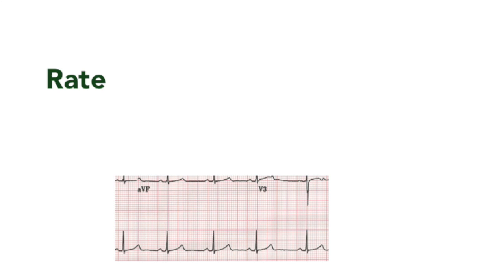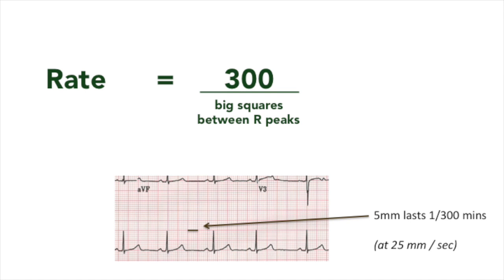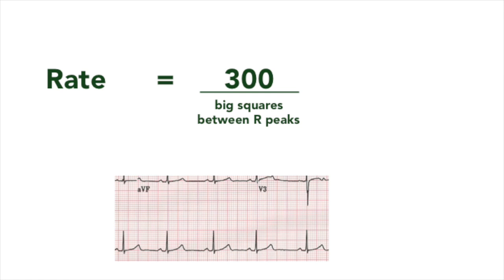For an ECG printing at 25mm per second, one big square represents 0.2 seconds, or 1/300th of a minute. The rate can be calculated by dividing 300 by the number of big squares between each R peak.